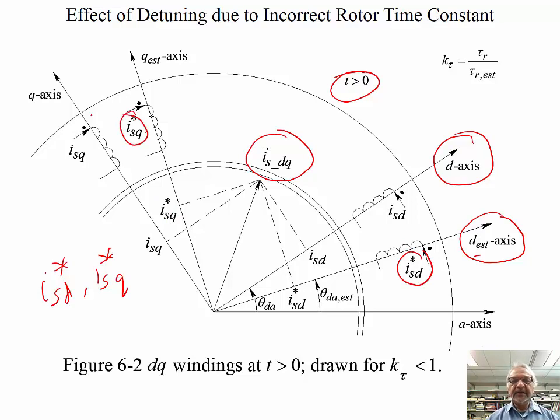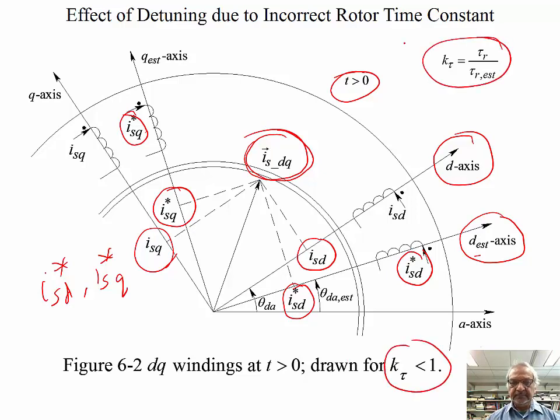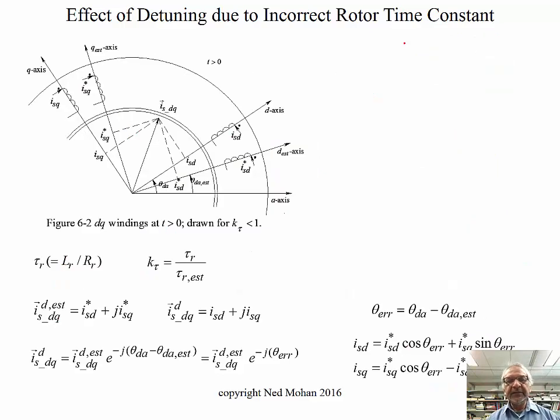And at a given time t, whatever that is, the stator current space vector is over here. So that space vector is there, but depending upon which reference axes we are looking at, ISD and ISQ could be very different. So we are applying the reference currents to the wrong set of axes. We agreed on that.